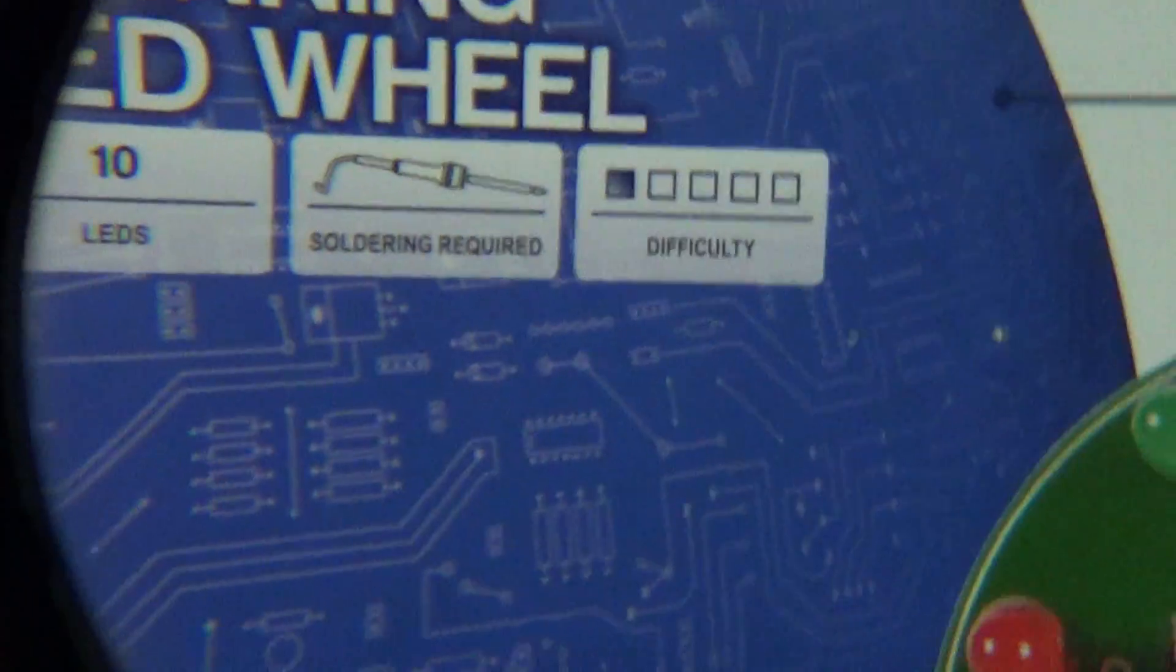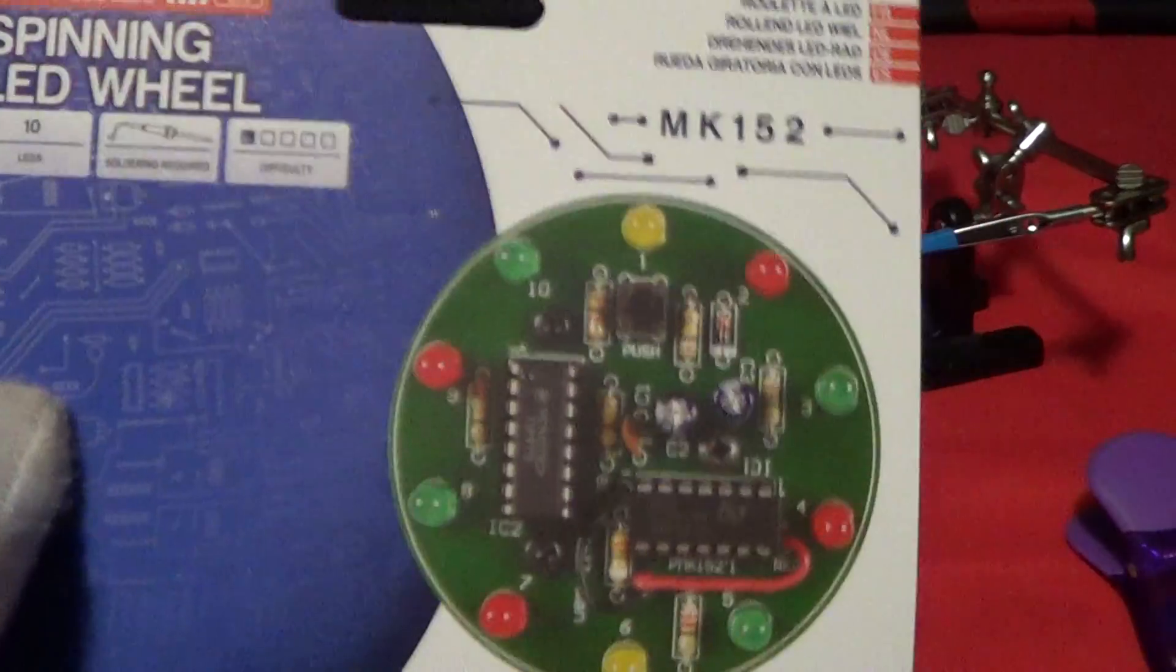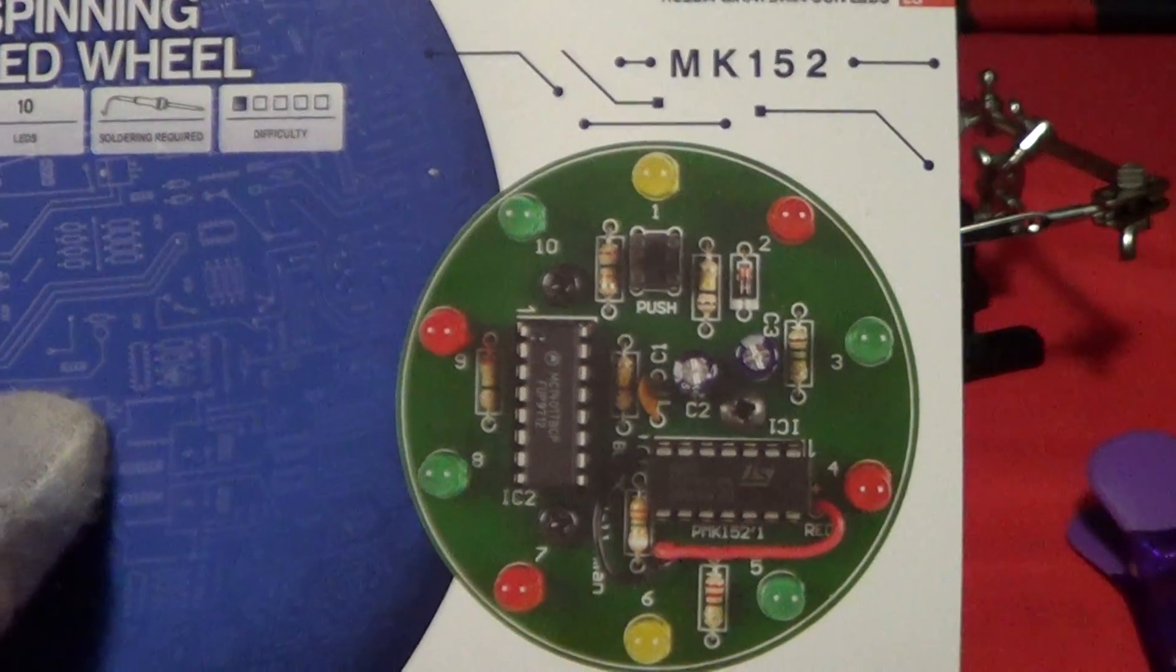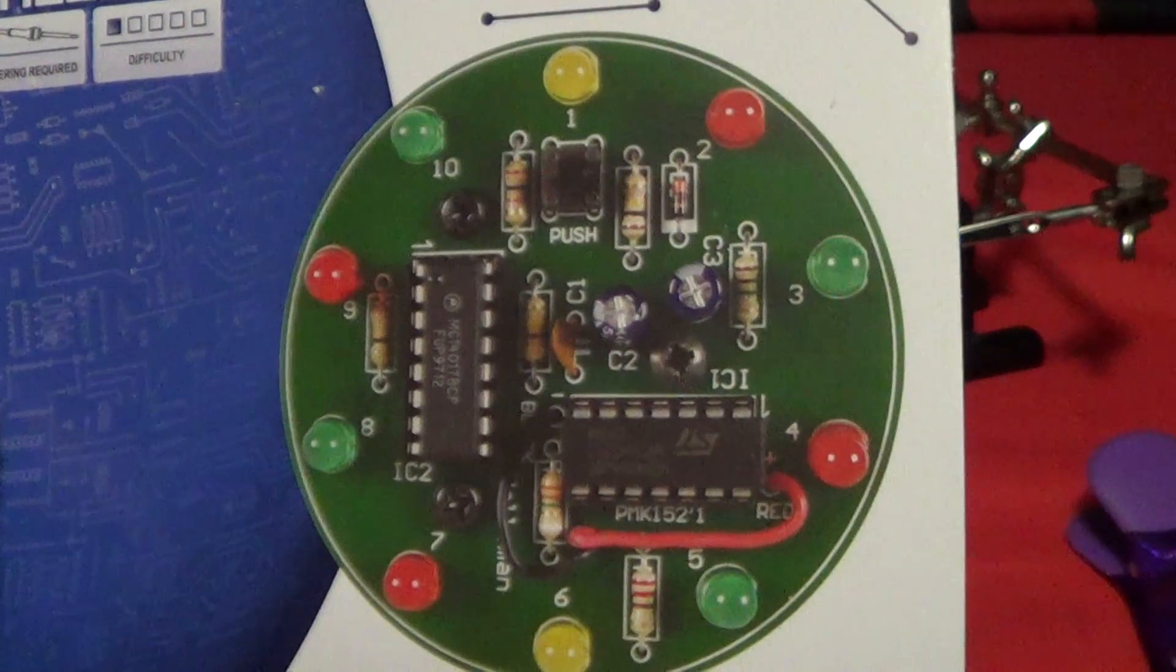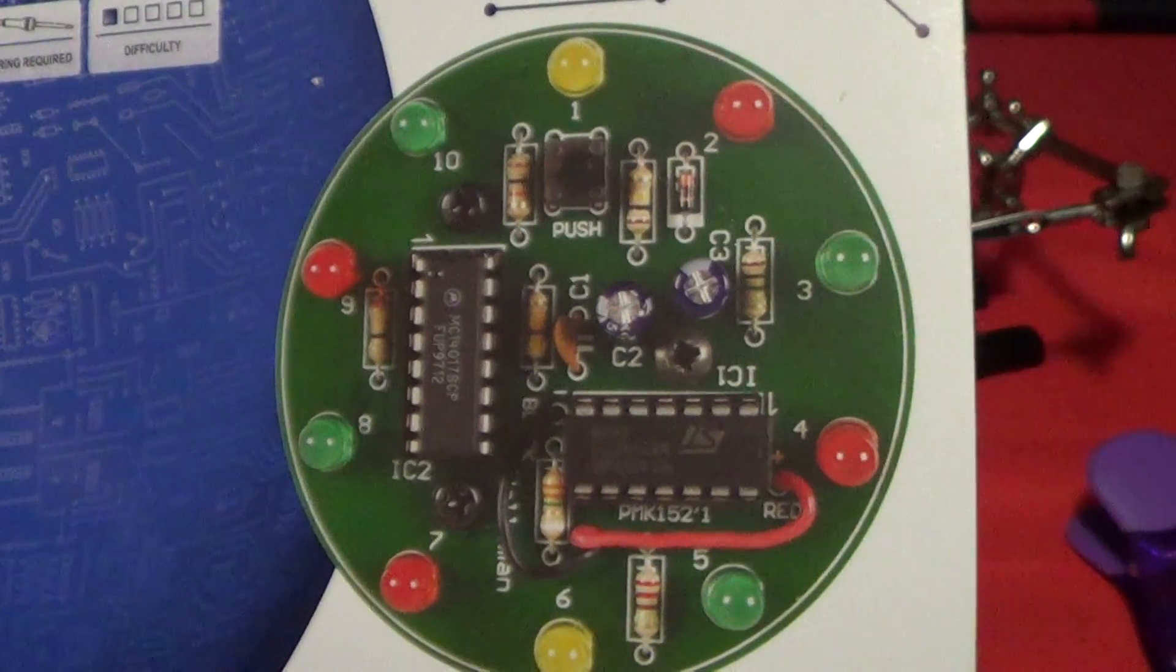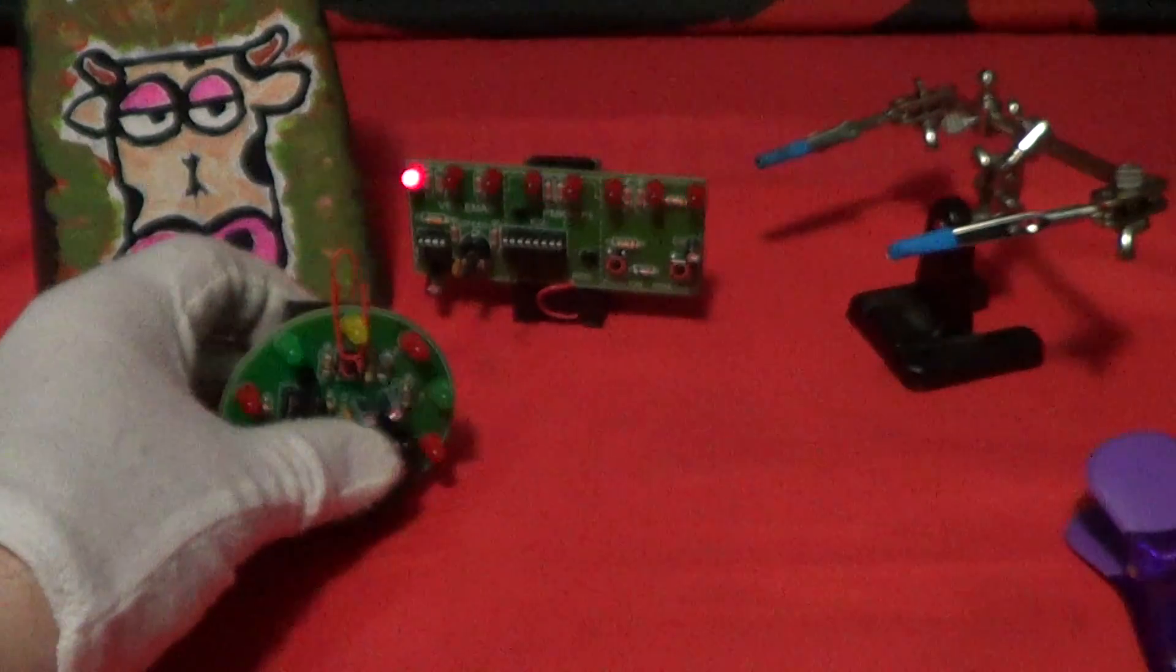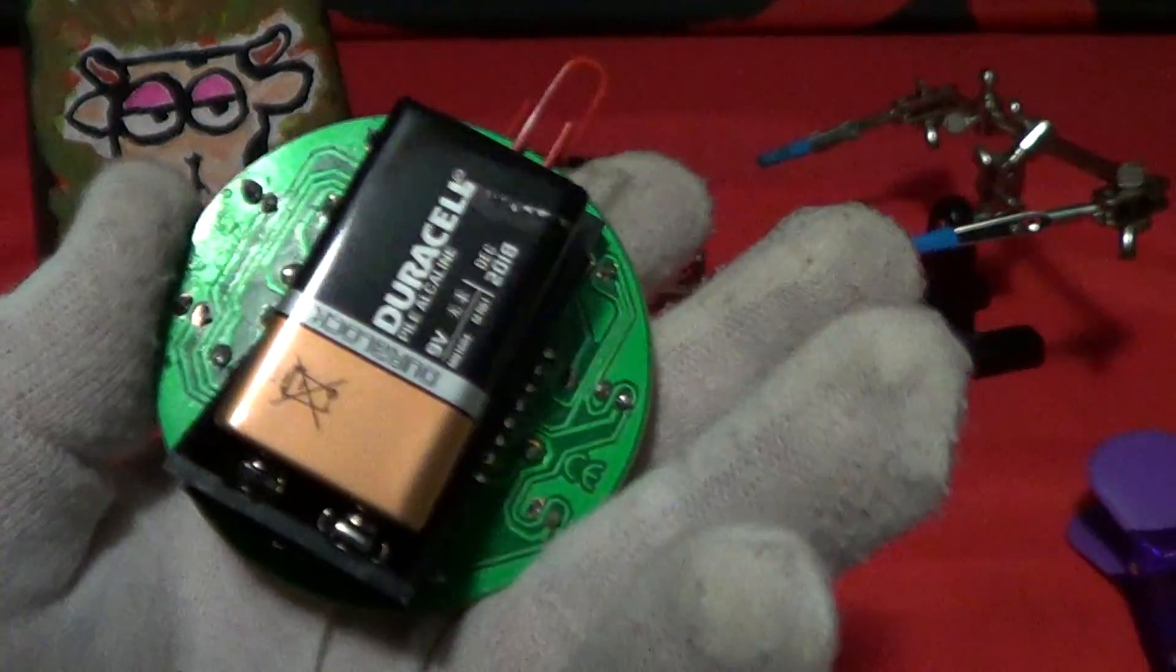That's what it looks like when it's finished. This thing has 30 components - it's got capacitors, resistors, a push button, some IC chips, and approximately 75 soldering points. You can see it's powered by a 9-volt battery.